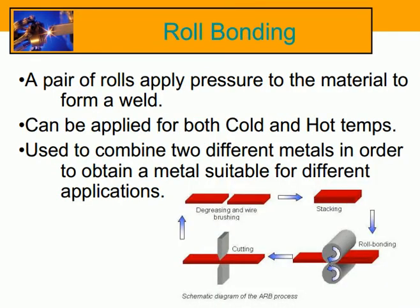Roll bonding: a pair of rolls applies pressure to the material to form a weld. It can be applied at both cold and hot temperatures, and is used to combine two different metals in order to obtain a metal suitable for different applications.